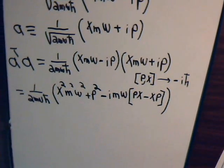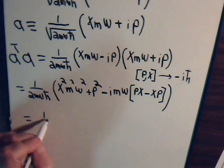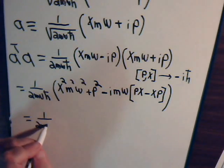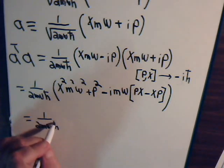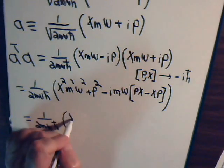So, let's see what kind of expression we get from this. This equals 1 over 2m omega h bar.